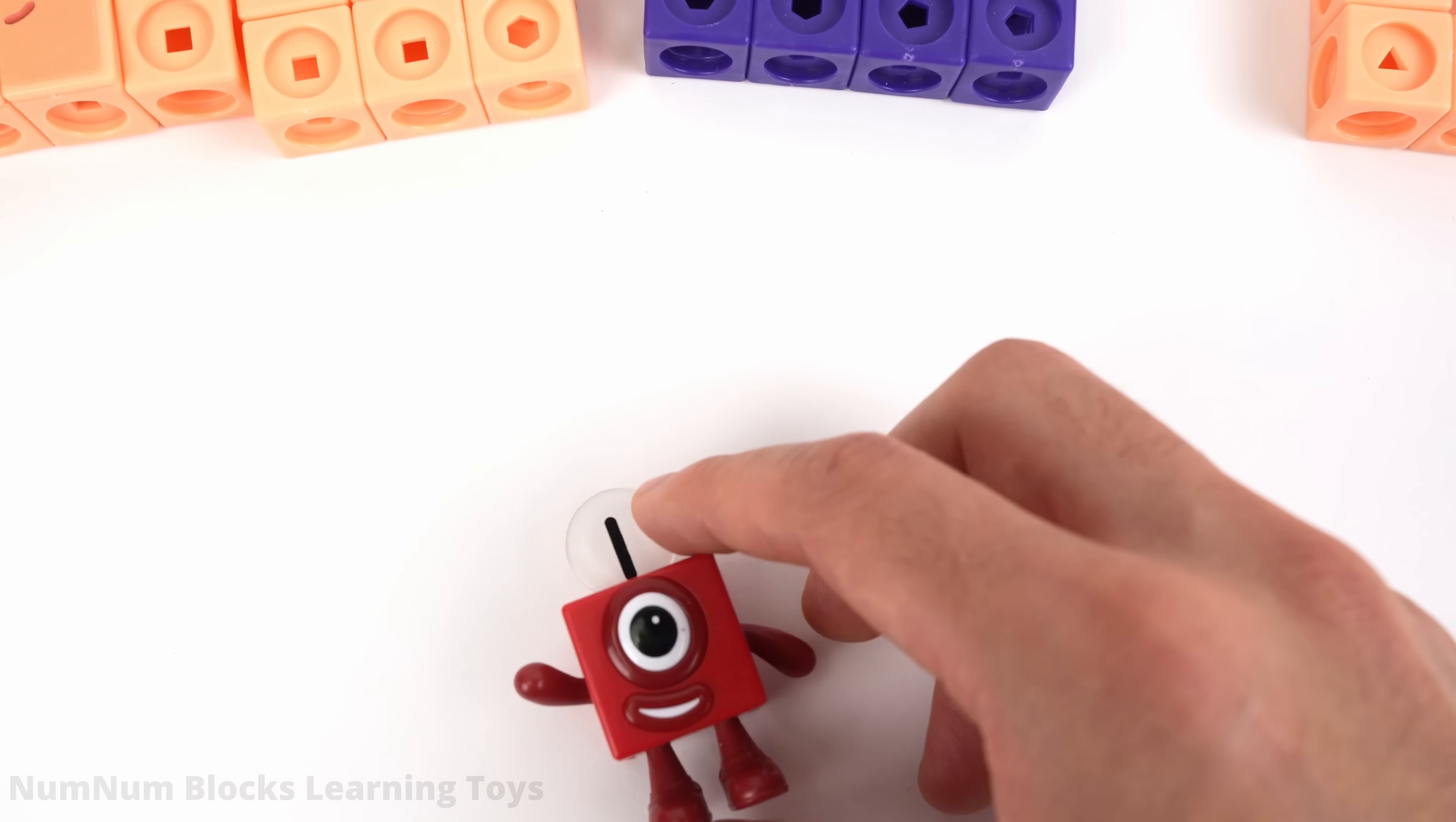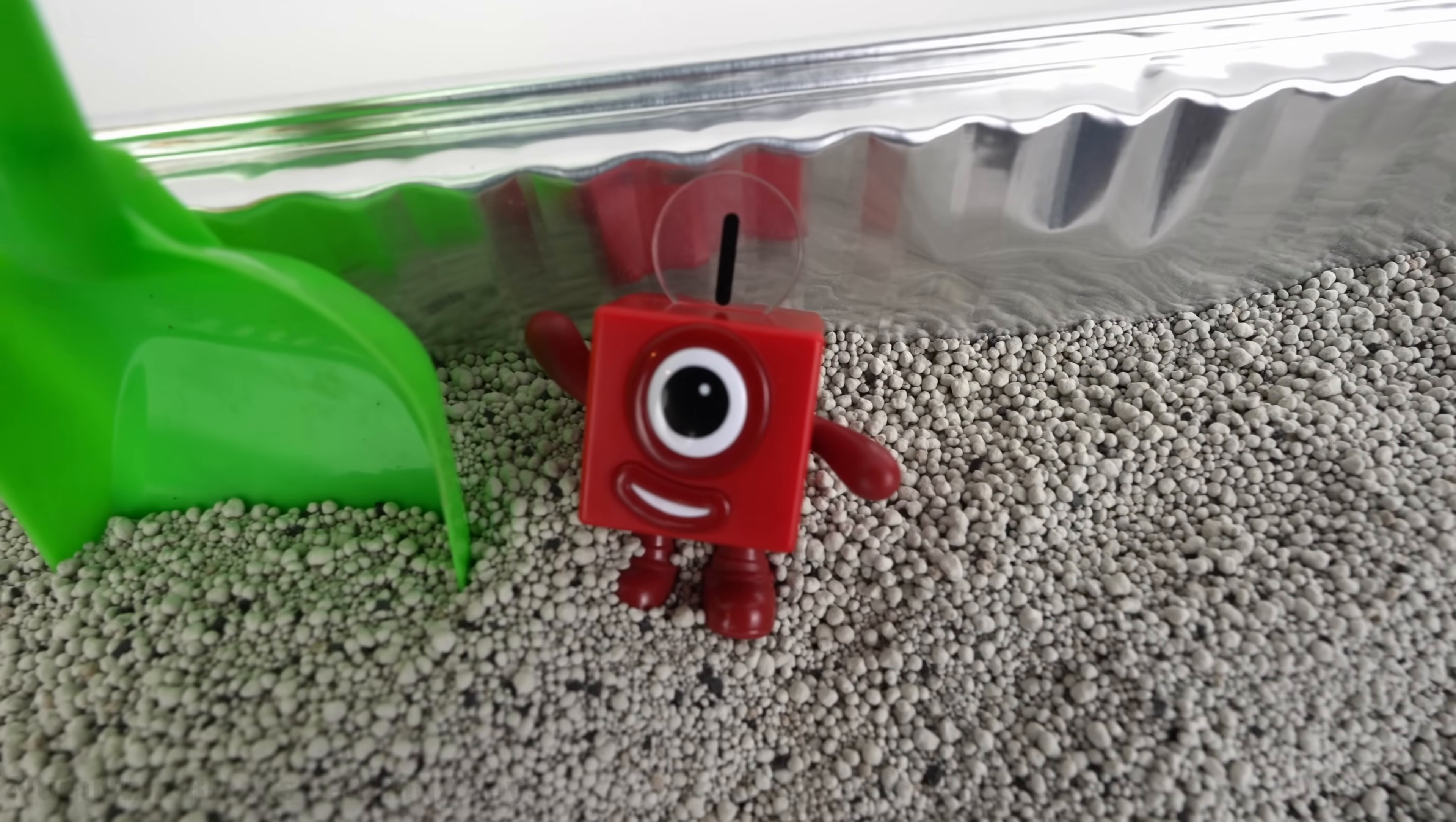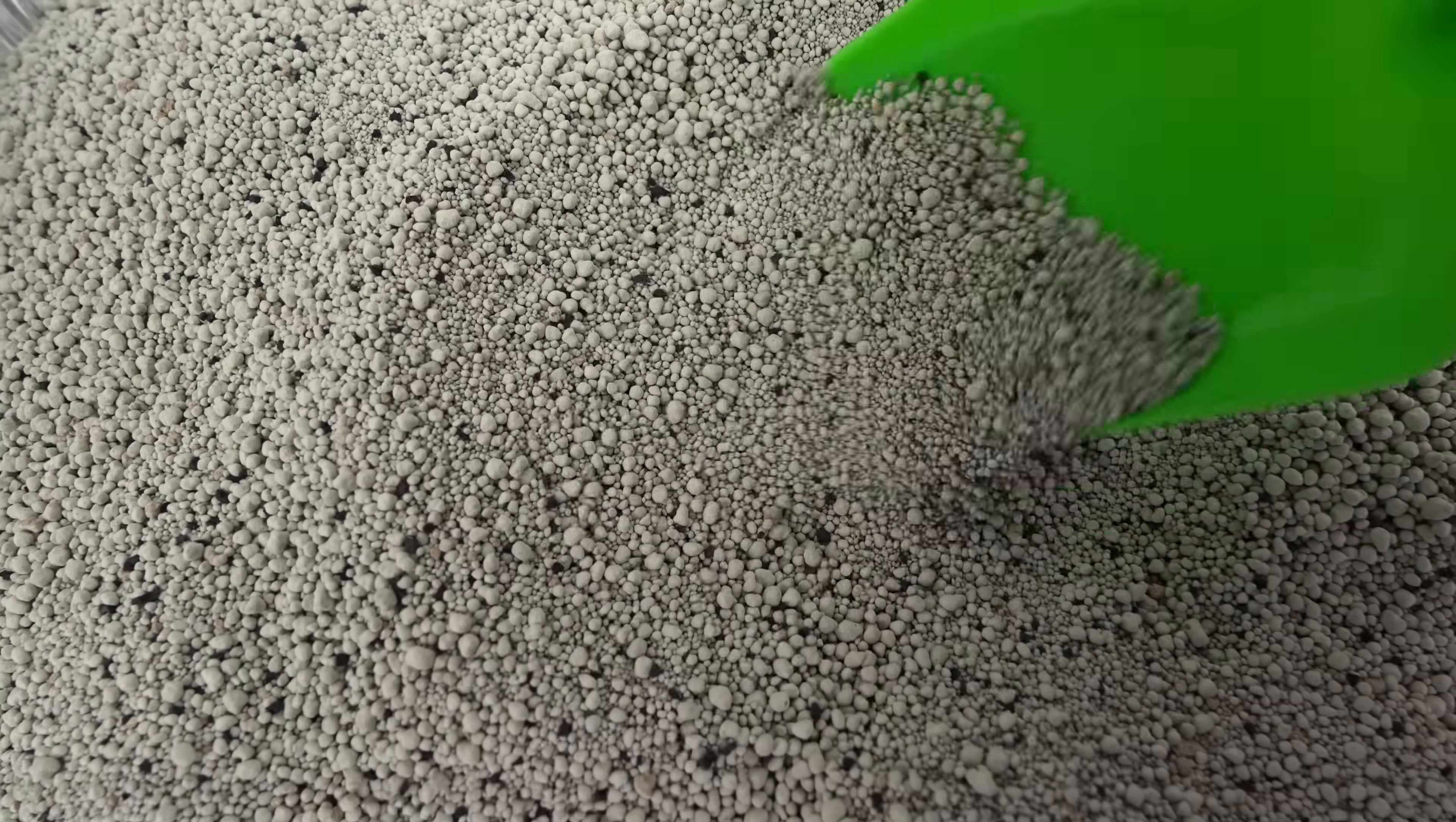Look, it's number one. One is an odd number. The missing odd numbers are buried under the sand. Follow me. Use this green shovel to dig my friends out. Alright team, let's find the odd numbers.